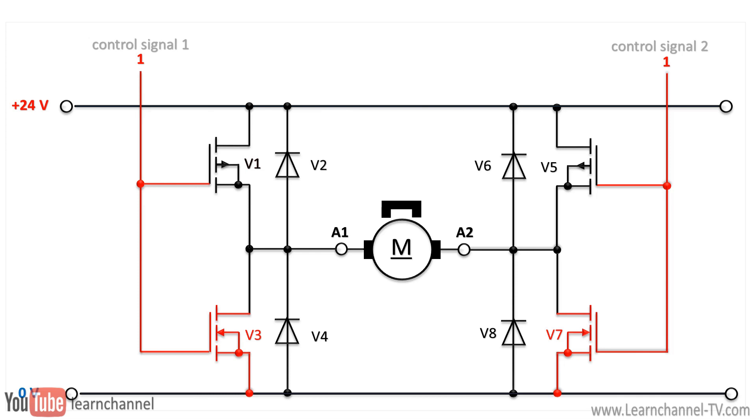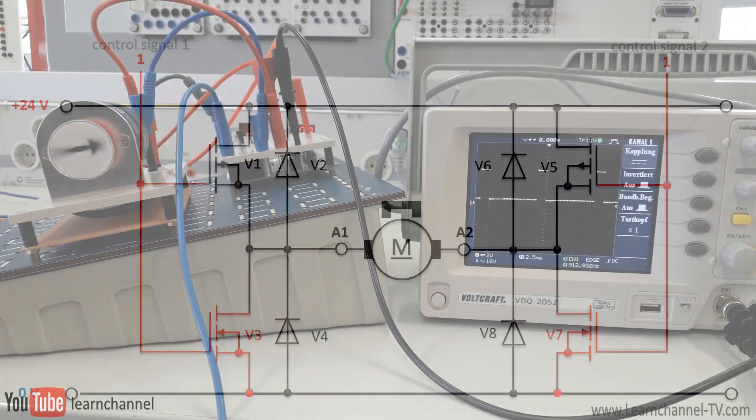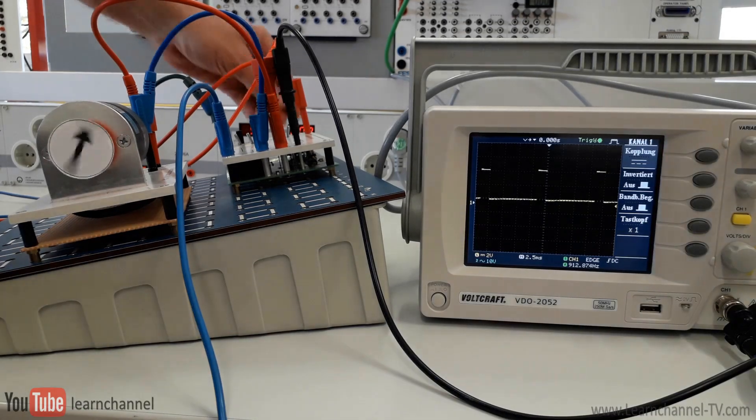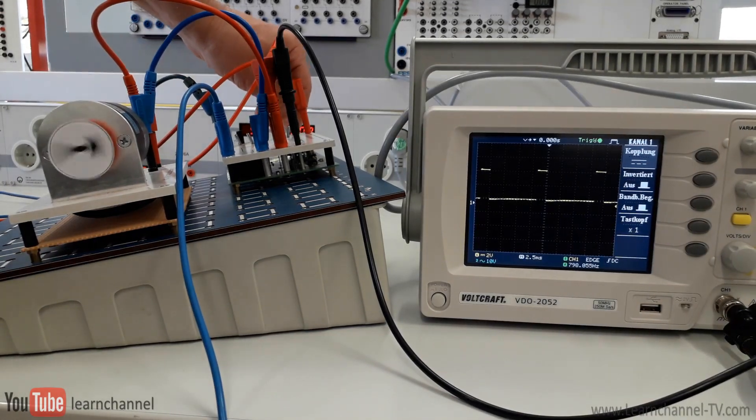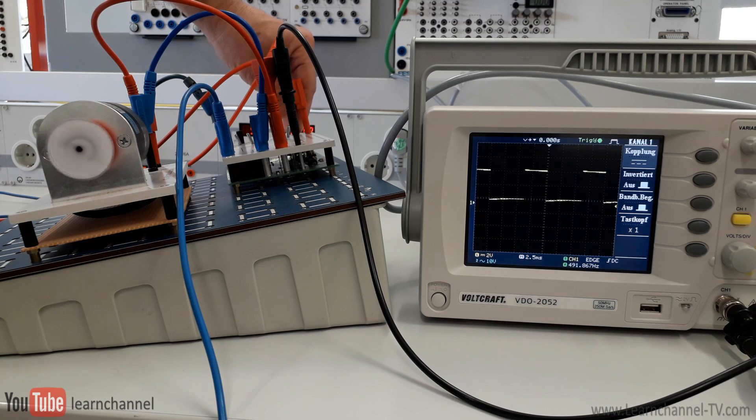But the H-bridge can do even more. Since these transistors can have a very high switching frequency, the average value of the DC voltage can be controlled by the so-called pulse width modulation, also referred to as PWM.